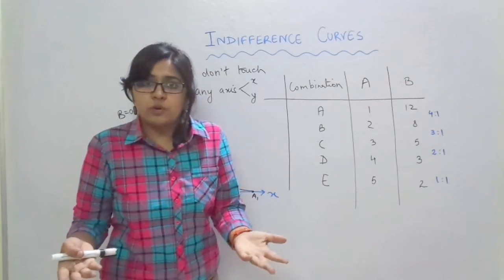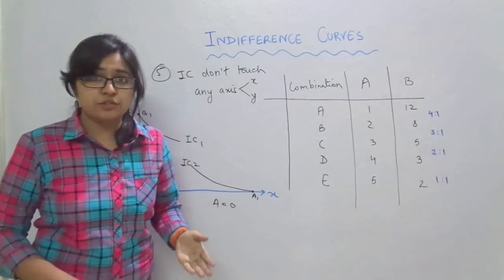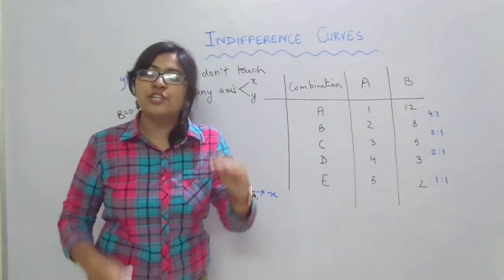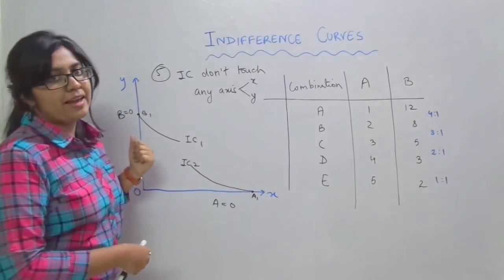It is just one good. So that is why the fifth property is very important to note that indifference curve would not touch any of the axis whether it is x axis or whether it is y axis.